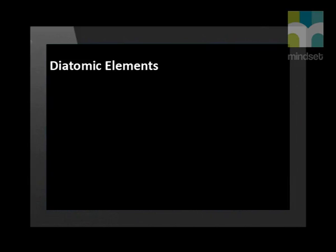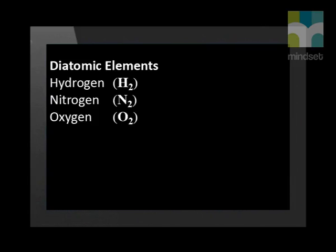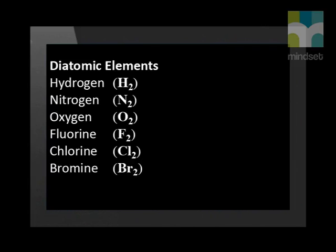The simplest type of covalent bond forms between two atoms of the same element. This type of molecule is called a diatomic molecule. The seven diatomic elements are hydrogen (H2), nitrogen (N2), oxygen (O2), fluorine (F2), chlorine (Cl2), bromine (Br2), and iodine (I2).